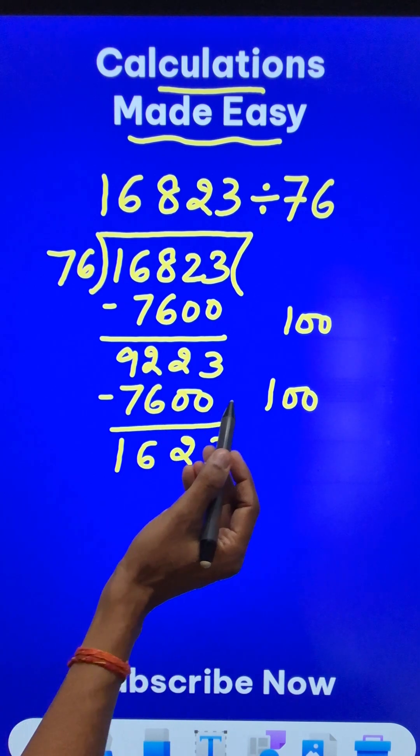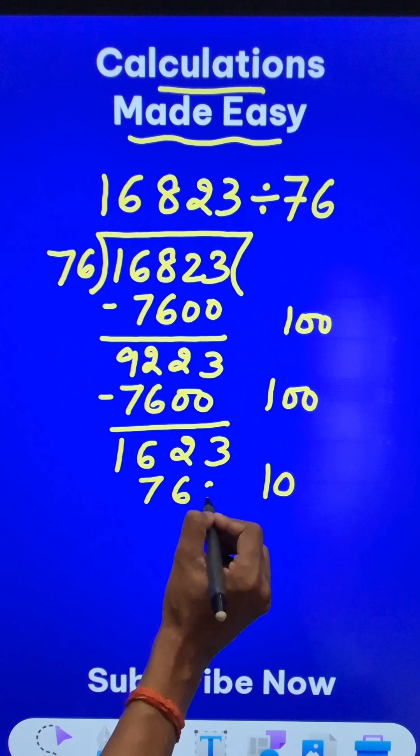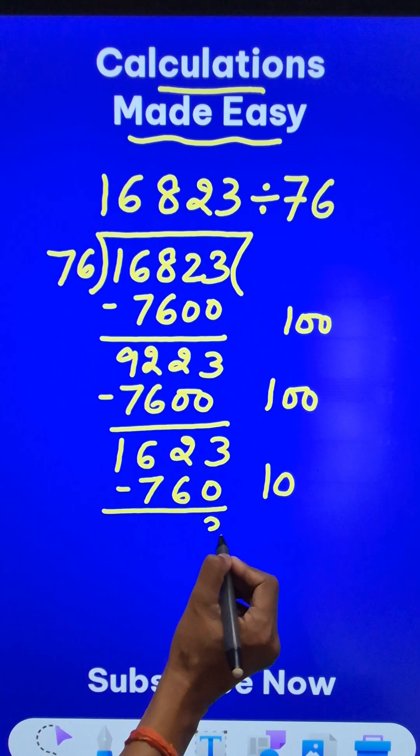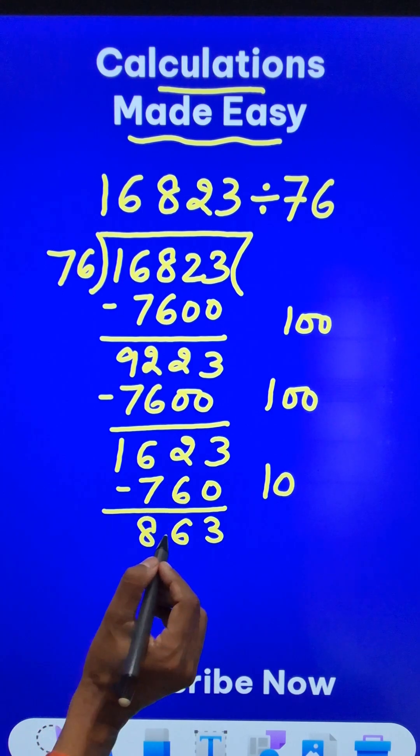And now I can't do 100 times so let's do 10 times. 76 times 10 is 760, subtract you get 863, again greater than 760.